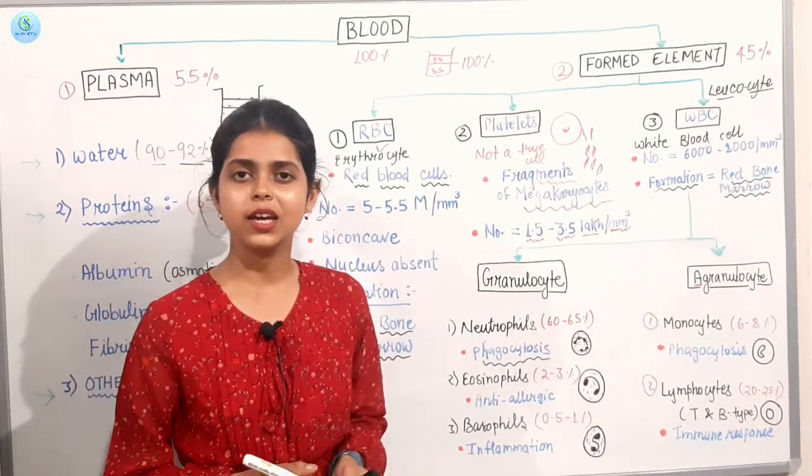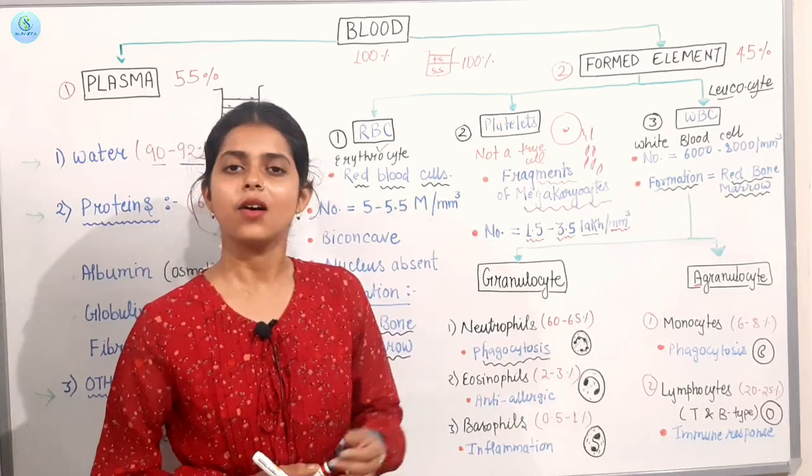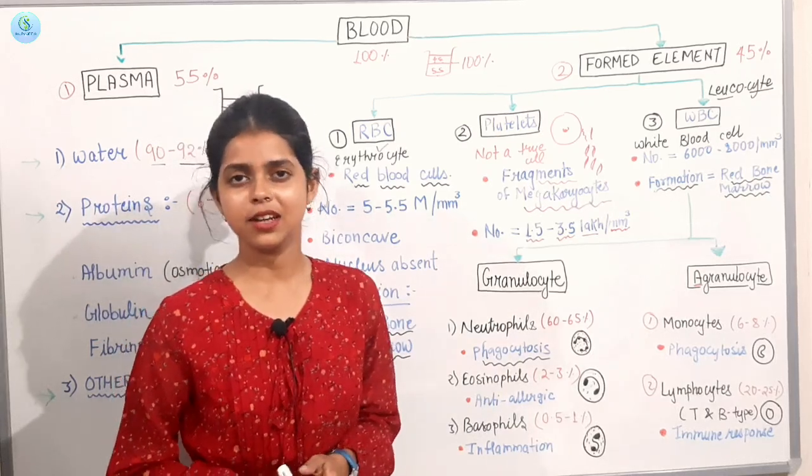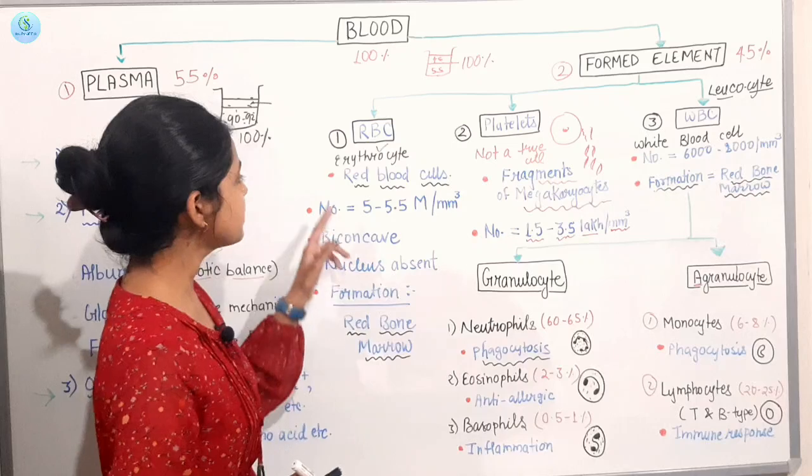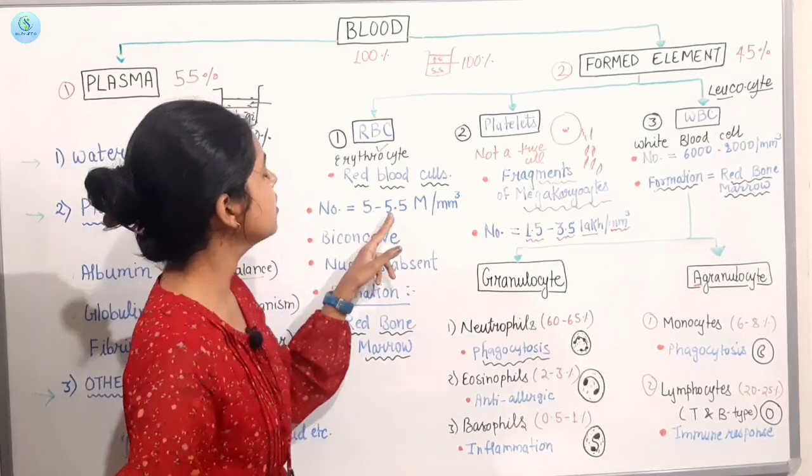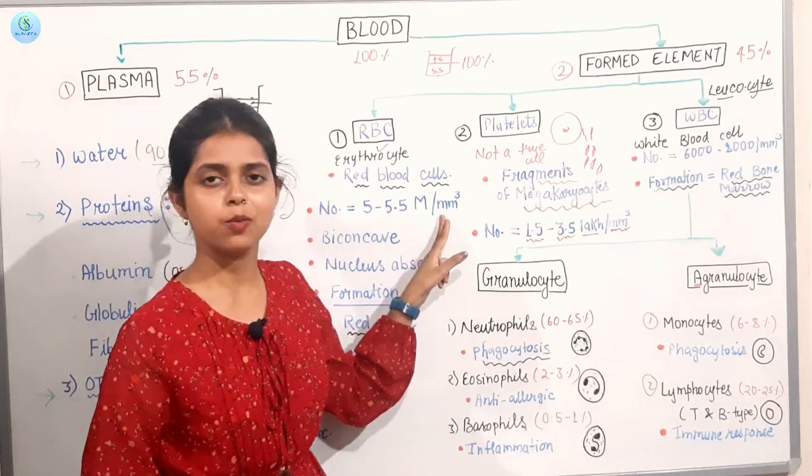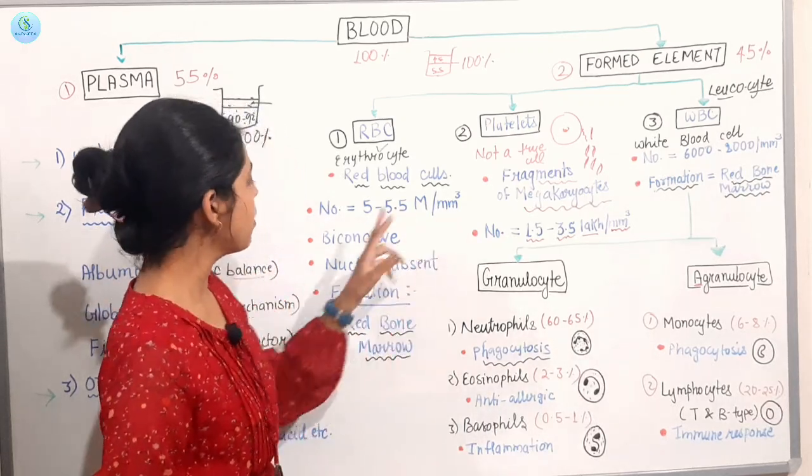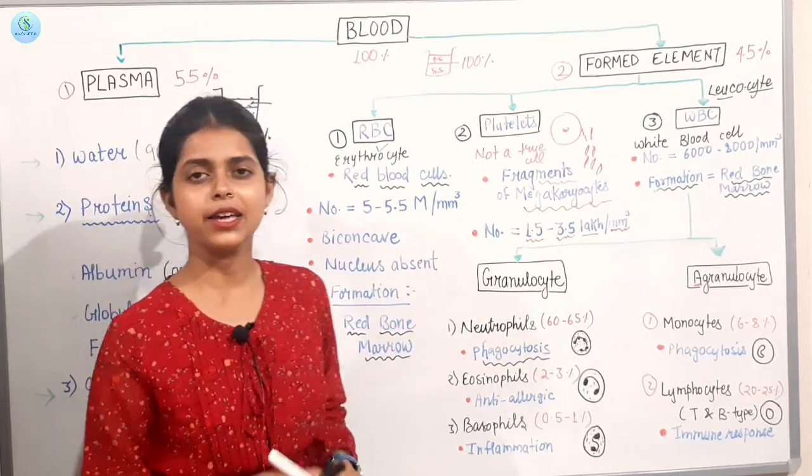This is red blood cells. It is red because hemoglobin is present. This is our other name, it is our erythrocyte. Let's see what other things are. If we talk about this number, it is 5.5 million per micrometer cube. This shape is bi-concave.